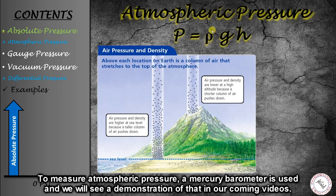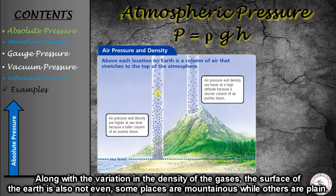We cannot calculate atmospheric pressure with this formula directly. This is why we use a mercury barometer, which we will see in our future videos to understand how atmospheric pressure is calculated. The change in density of gases in our atmosphere means that the Earth's surface is not even.